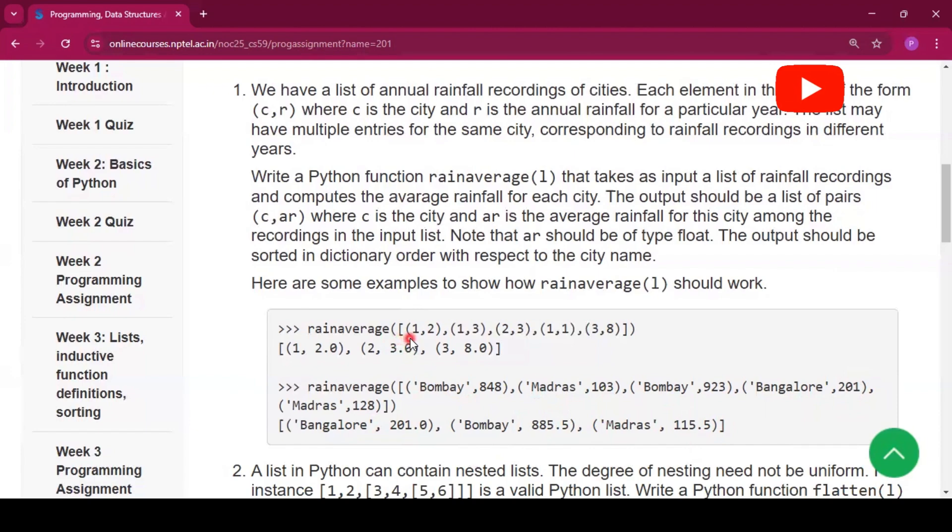Now in this case for 1, the value is 2, 3, and 1. So the average will be (2 plus 3 plus 1) that is 6 by 3, so 2.0. Now for 2, there is only one data that is 3, so 3 is there. Now for 3, there is only one data again, so 8.0 is there. So that's the function we have to write.